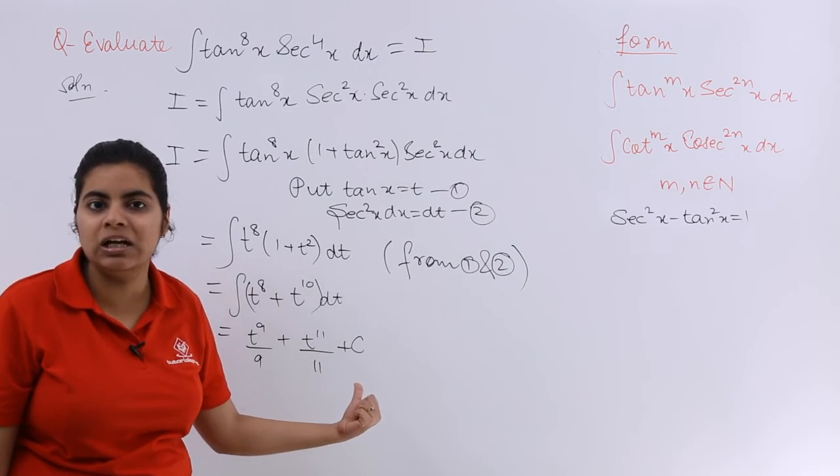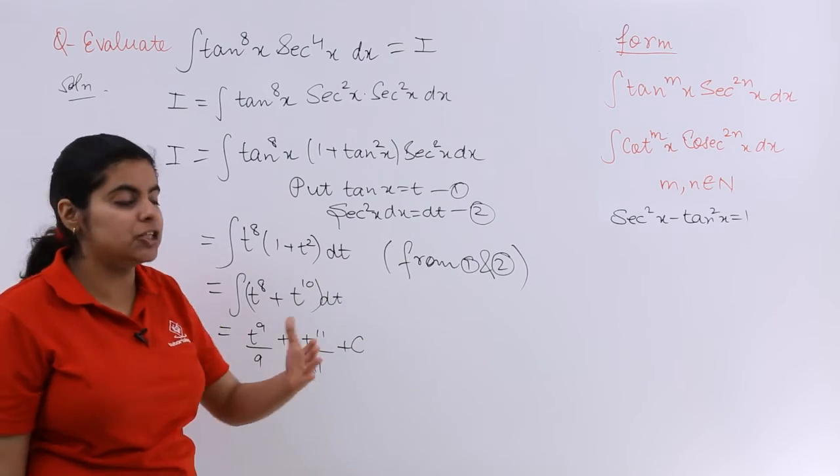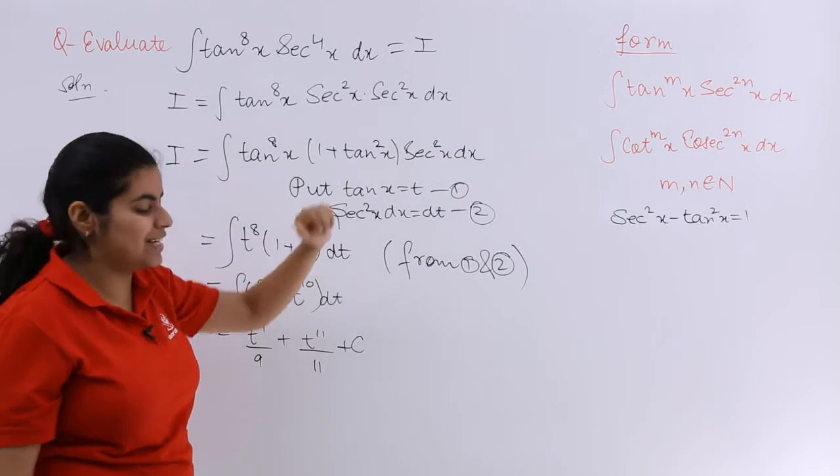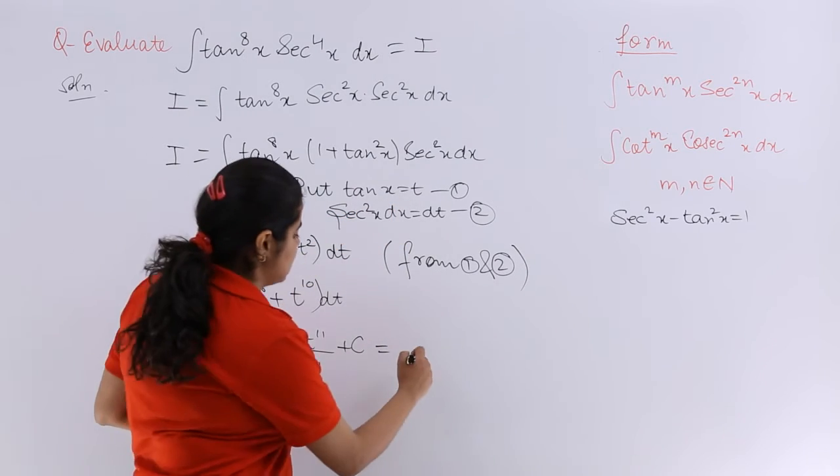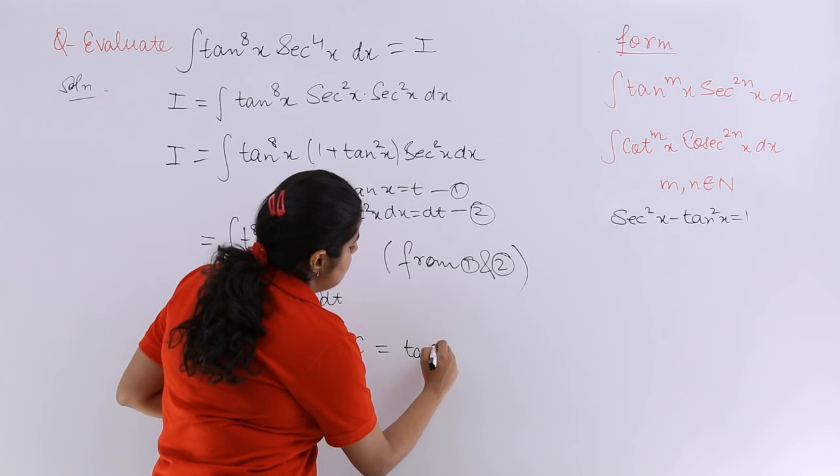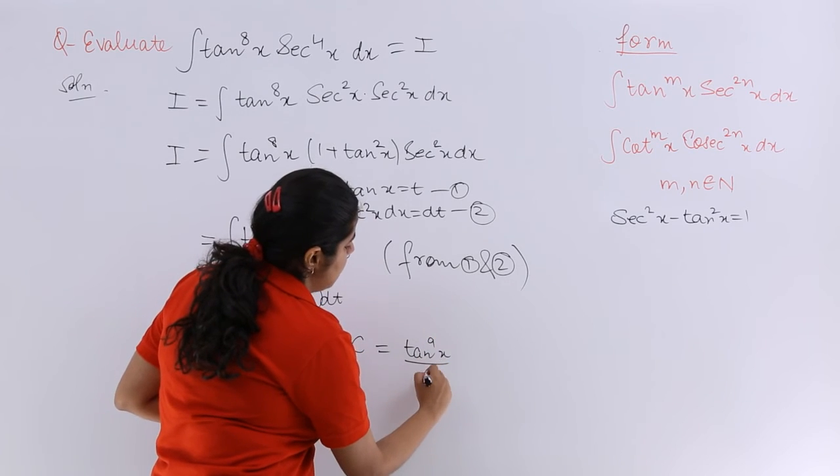Now can I leave the answer here? No. I have to change it to the given variable which is x. So what is t raised to the power 9? I know that t is tan x. So it is tan x raised to the power 9 upon 9.